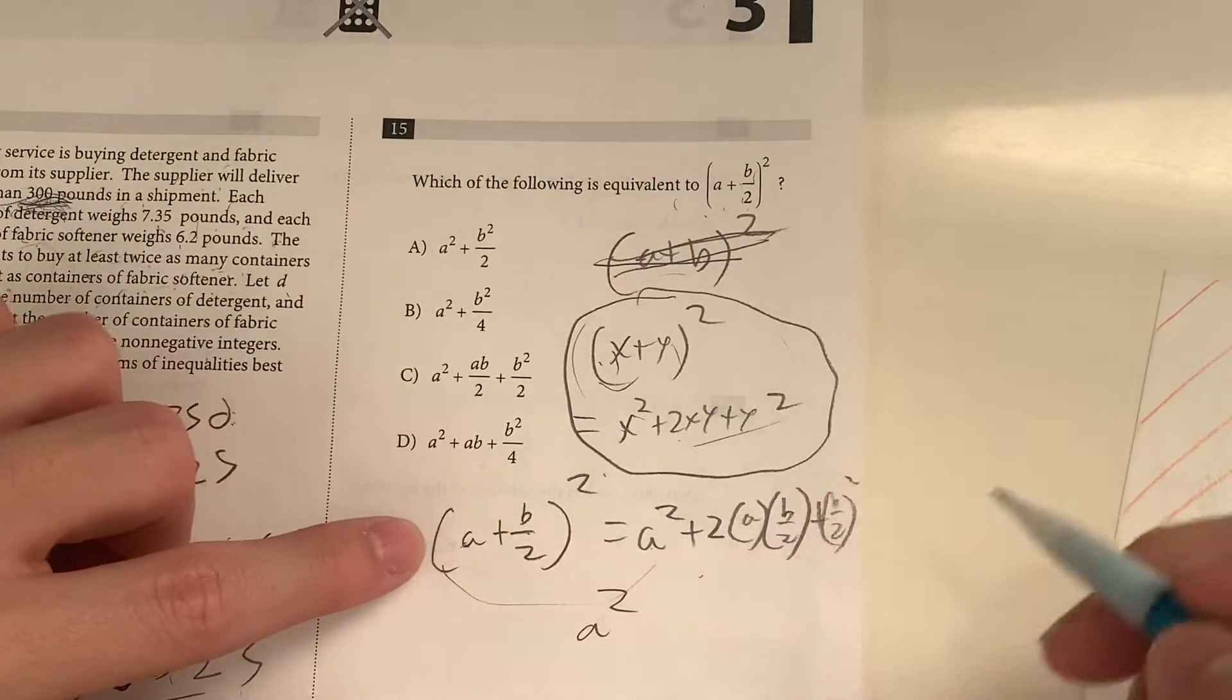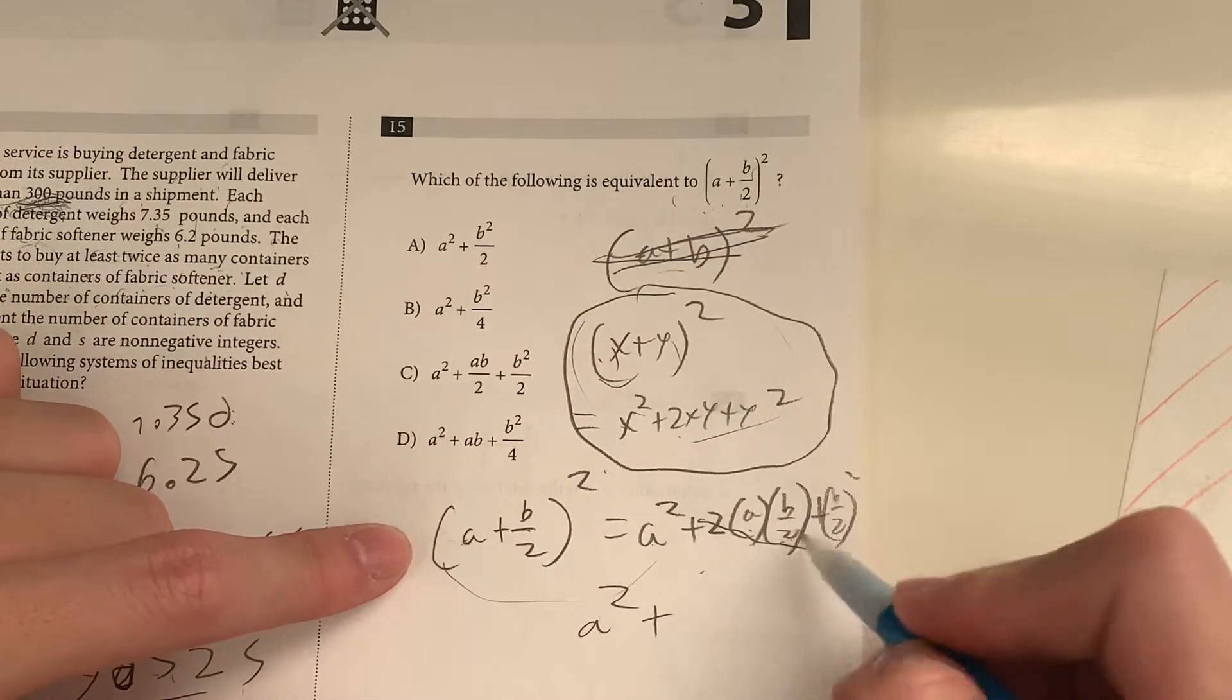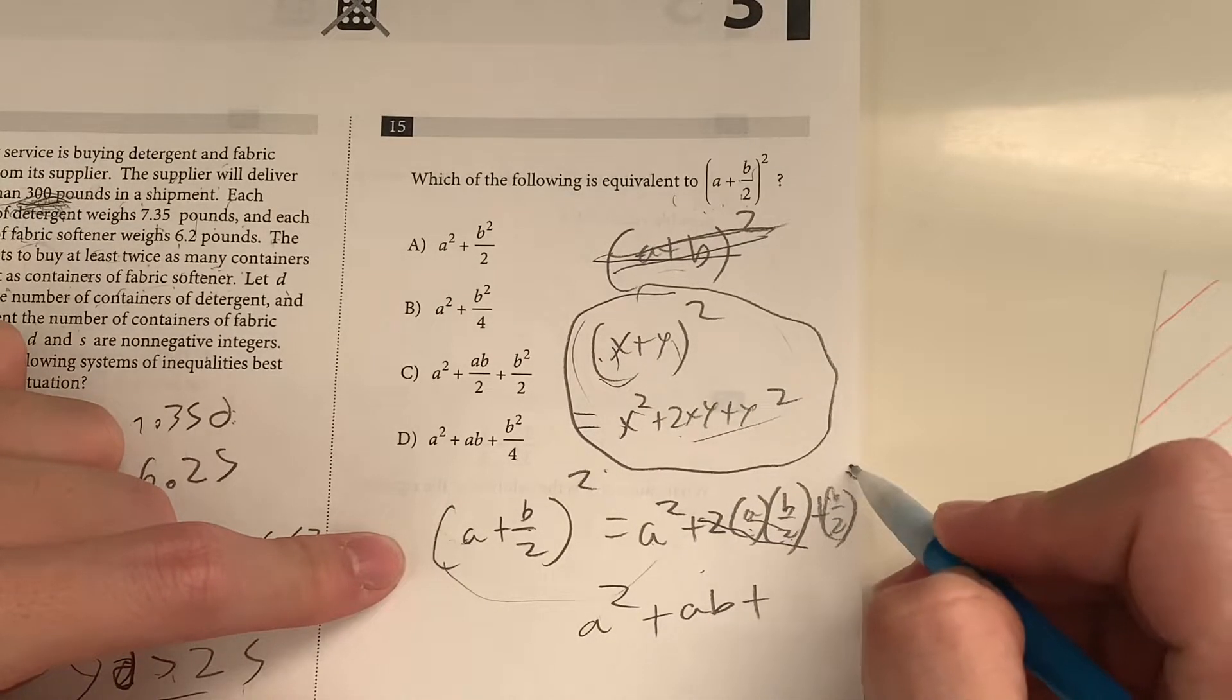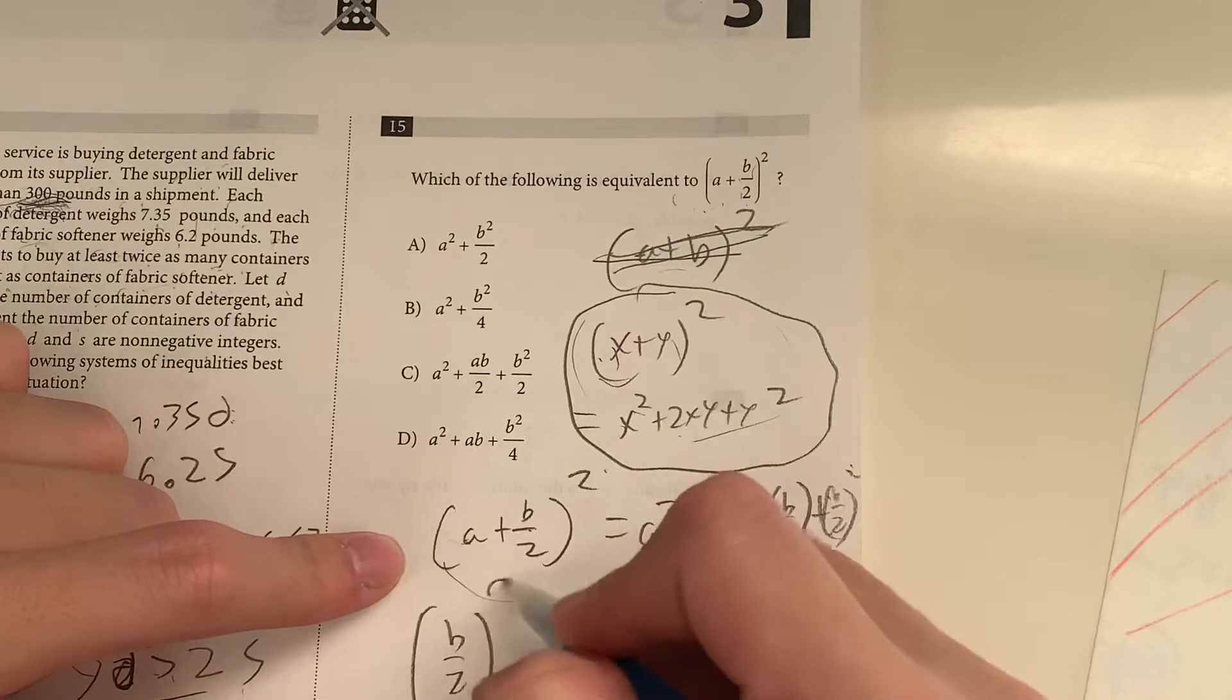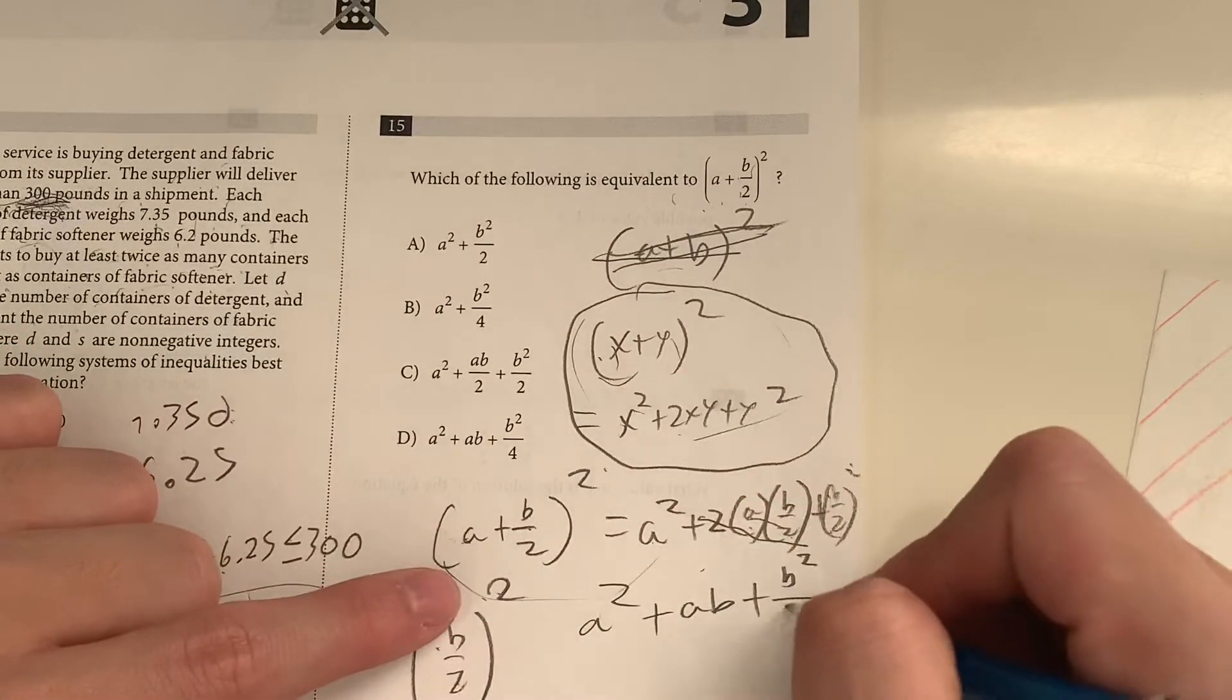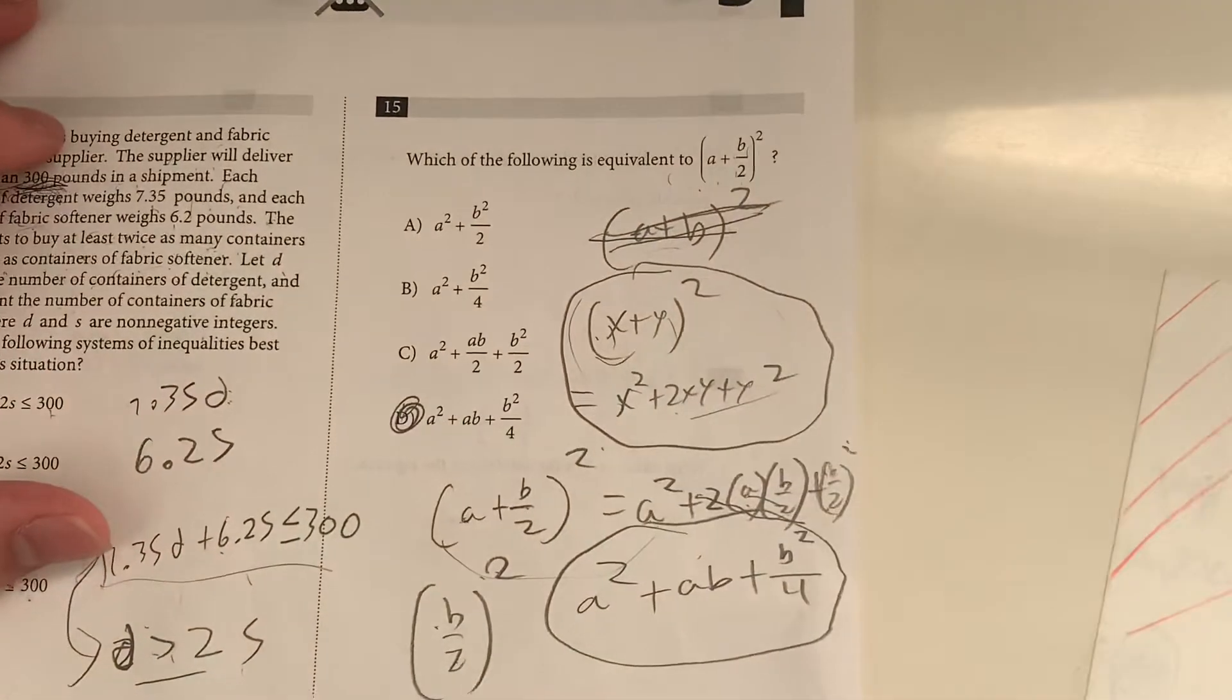Okay, so A squared doesn't really simplify. Plus 2 times A times B over 2. 2 over 2 cancels out. Just giving us AB plus B over 2 squared. So what's B over 2 squared? Basically, it's B squared over 2 squared, which is 4. So this is your simplified answer. Also meaning your answer has to be choice D.